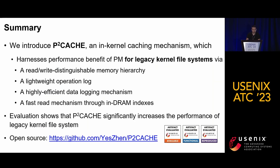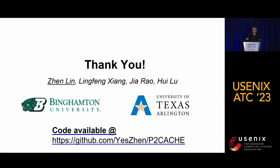In summary, we introduce P2Cache, an in-kernel caching mechanism which harnesses the performance benefits of PM for legacy kernel file systems via a read-write distinguishable memory hierarchy, a lightweight operation log, a highly efficient data logging mechanism, and a fast read mechanism through in-DRAM indices. Evaluation shows that P2Cache significantly improves the performance of legacy kernel file systems. P2Cache is now open source on GitHub. Thank you.